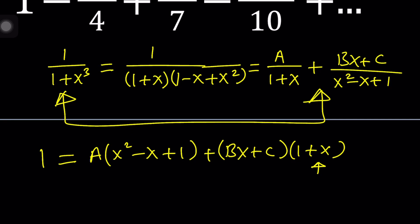Anyways, to keep a long story short, after doing all that work, you should be ending up with something like this: A is going to be 1 third, B is going to be negative 1 third, and C is going to be 2 thirds. So we've got 3 values, and they all seem to have a 3 at the bottom, which means I can kind of factor that out.